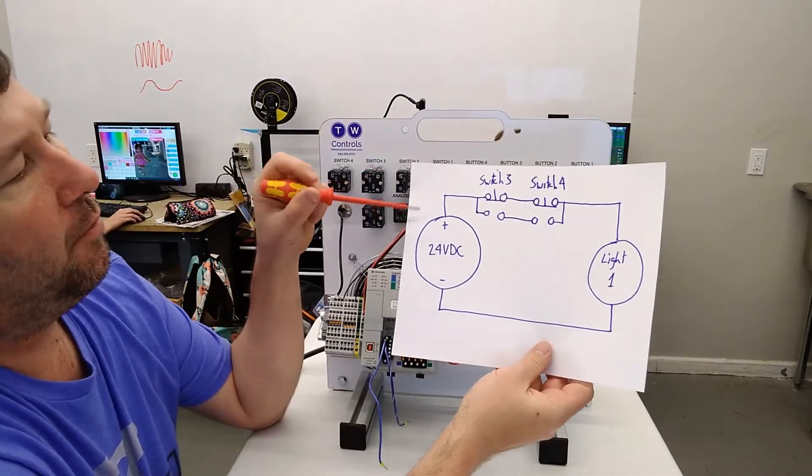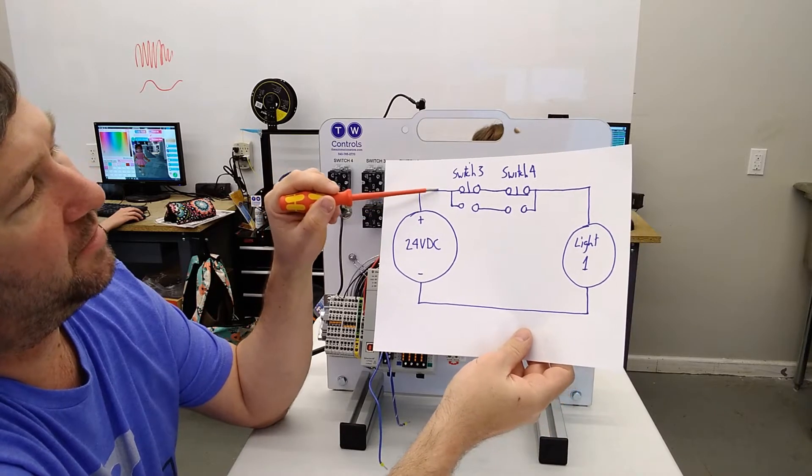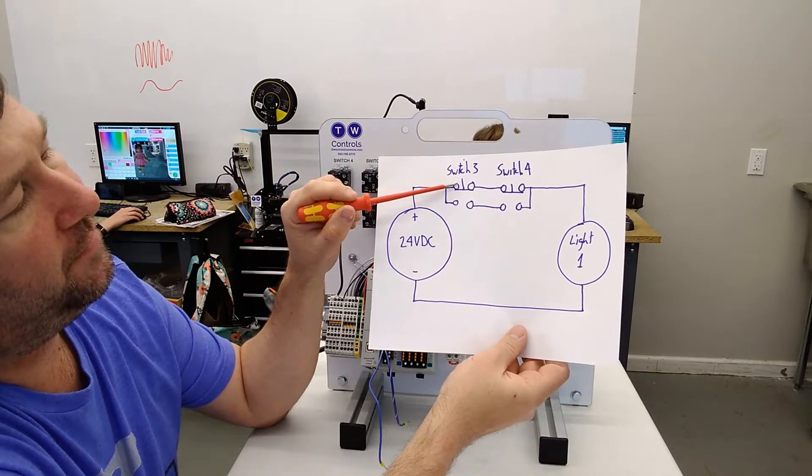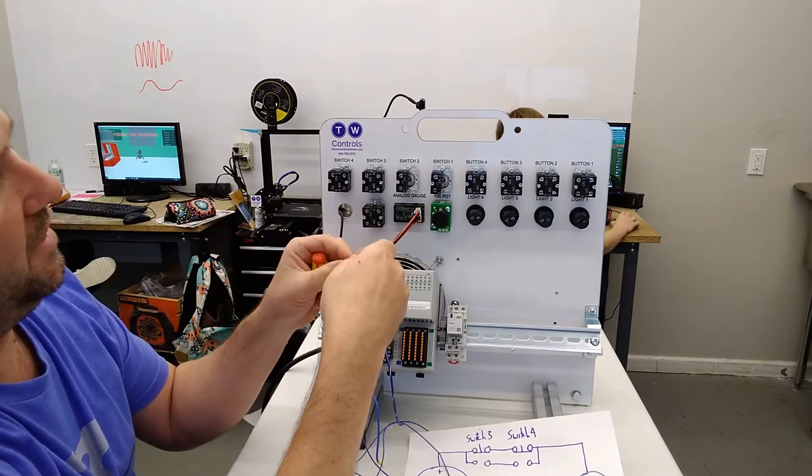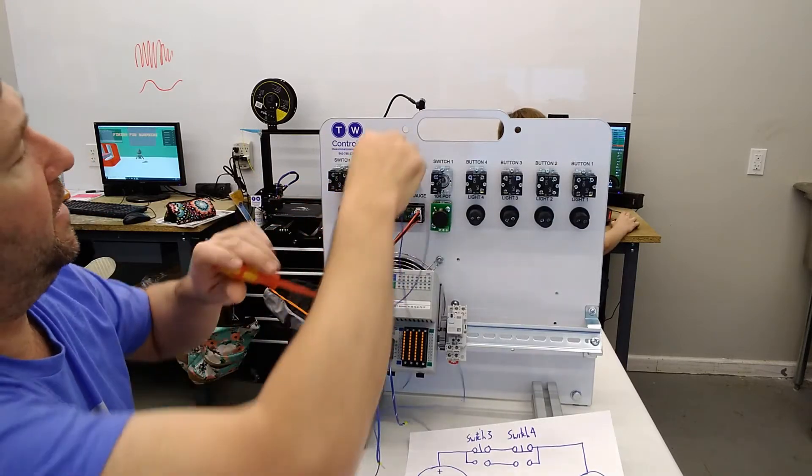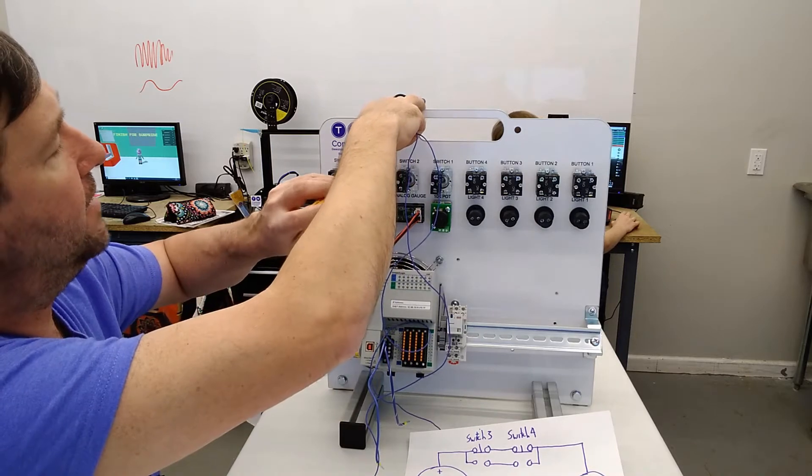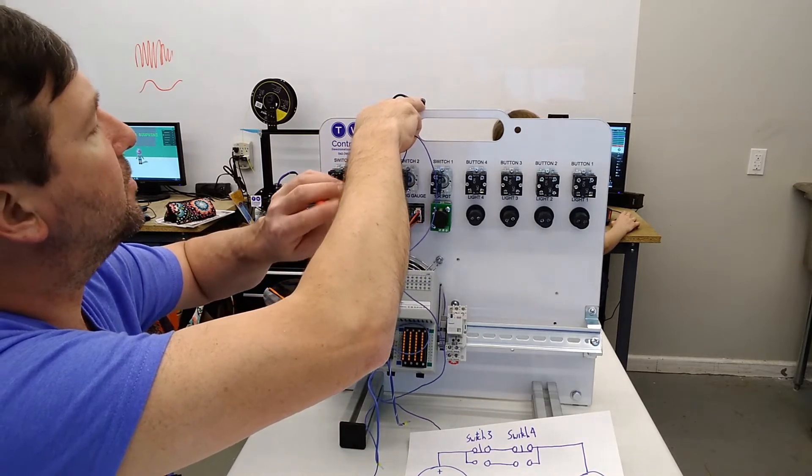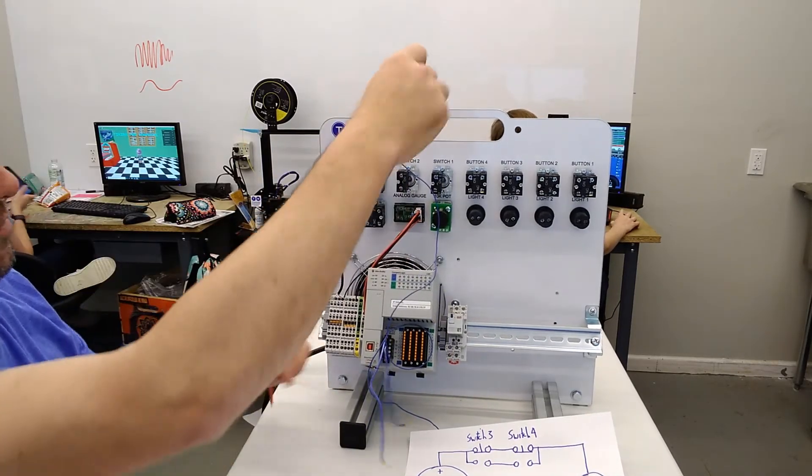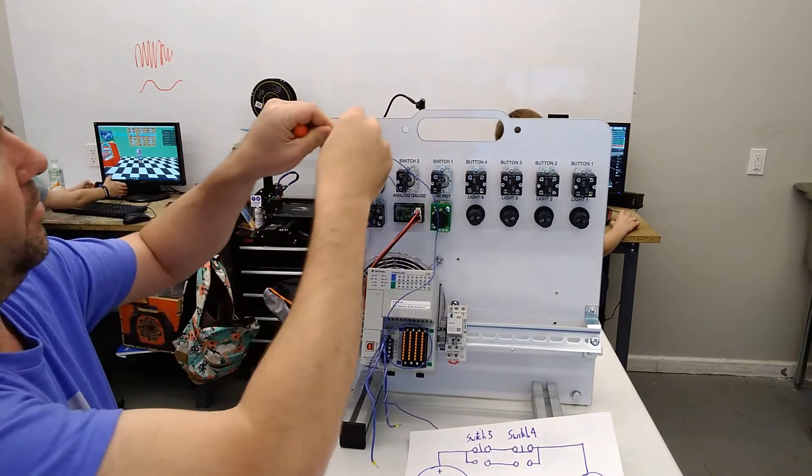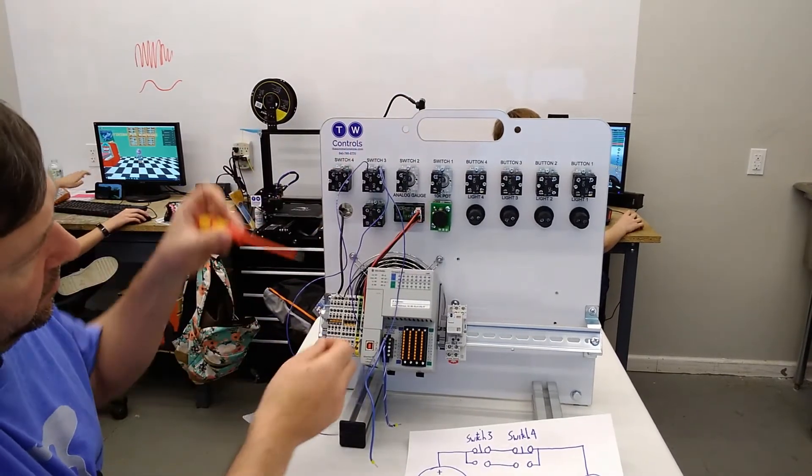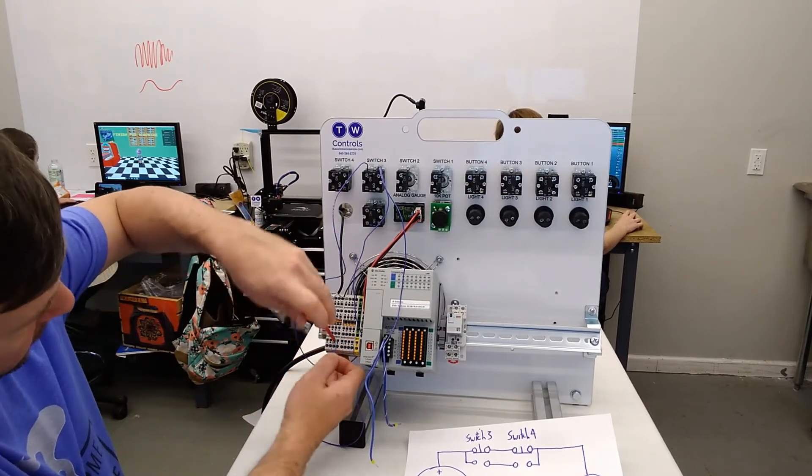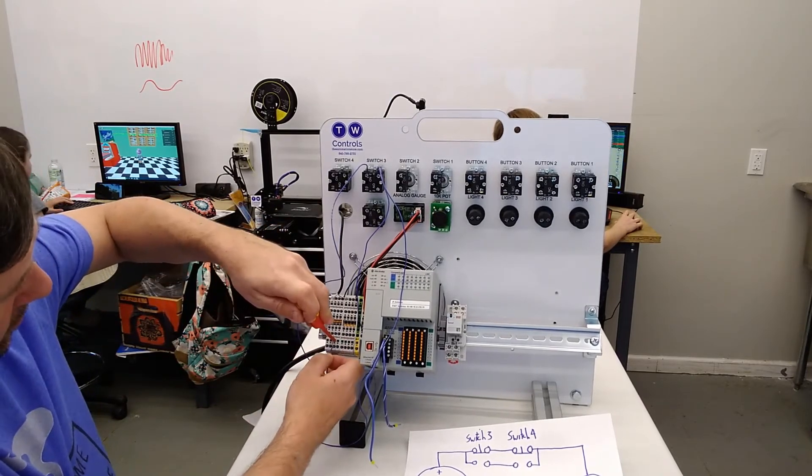First, we have a wire going from the plus of our power supply to both the left and the right contact of switch three. So we're going to take two wires and put them into the top right contact of switch three. And then one of those wires, we're going to jumper to the left contact. And the other wire is going to go to our plus 24 volt, which is the left set of terminal blocks.